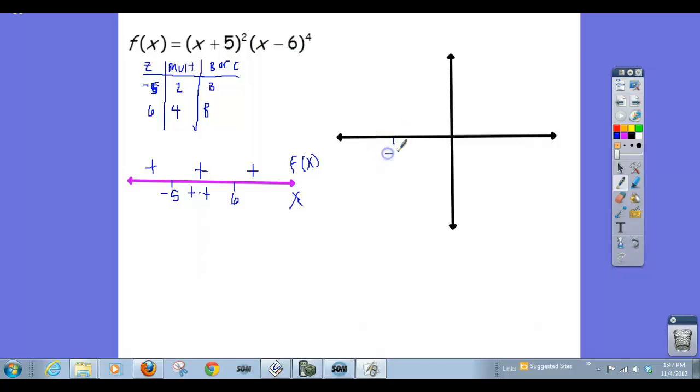So our graph looks like this. The function is positive and then positive and then positive. The function is always positive, except at those zeros. So it must come down, be zero, but then bounce. Now it's got to turn around at some point, zero, and then it bounces.